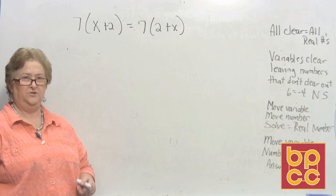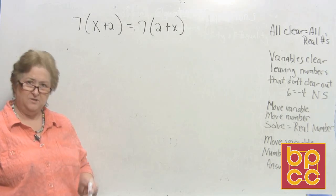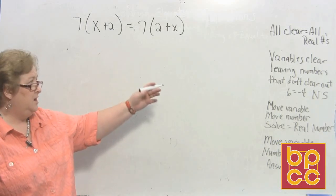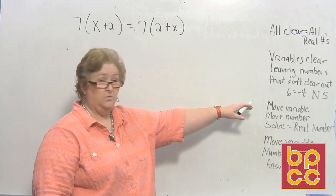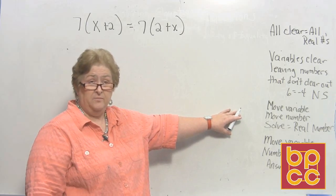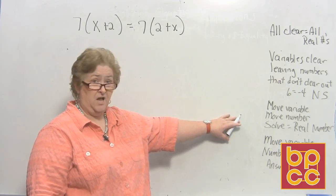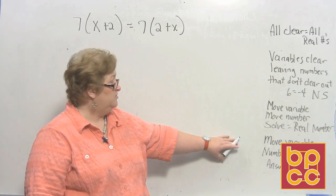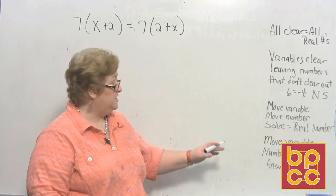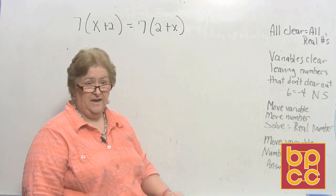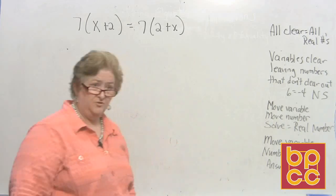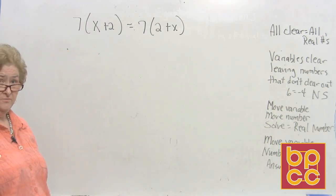I'm going to give you an equation to solve and the possible answers will be: everything clears out and the answer is all real numbers; the variables clear leaving numbers that don't clear — no solution; we move the variable then the numbers and get a real number answer; or the variable remains but the numbers clear out, and when you have a variable with no numbers the answer is zero.